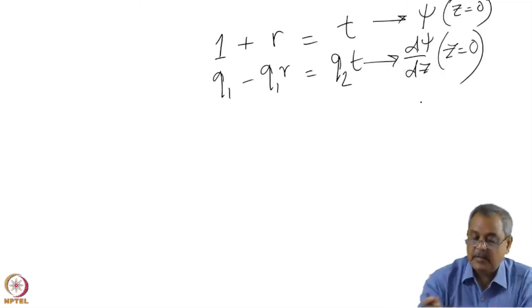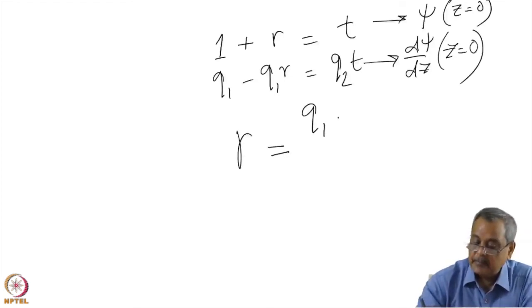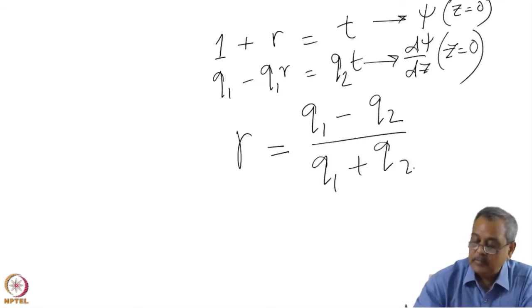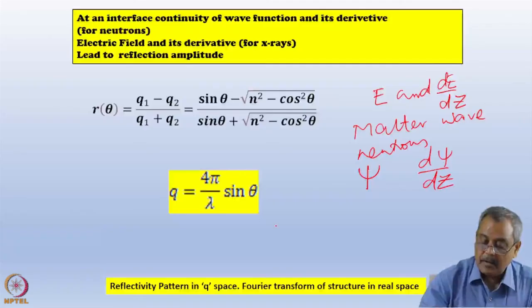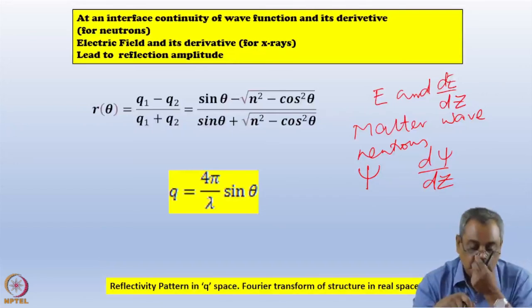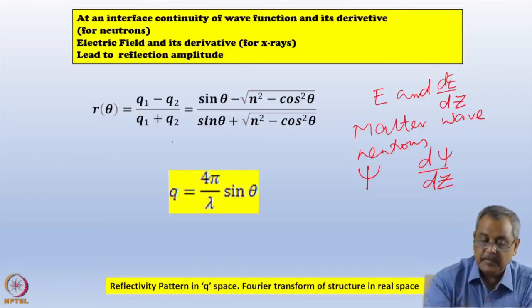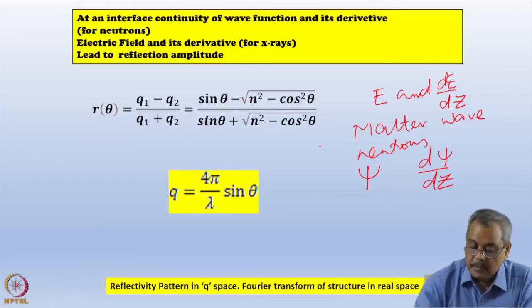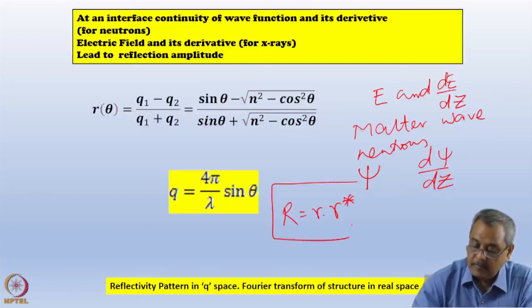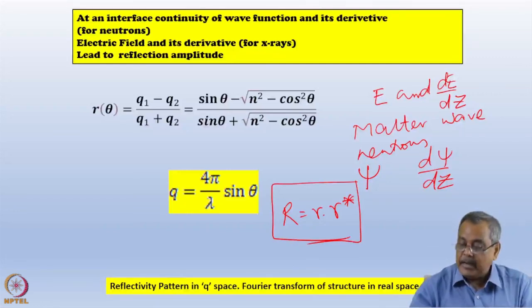Solving these two equations, I get the reflection amplitude r equal to (q1 − q2) divided by (q1 + q2). Writing q1 = 4π/λ · sin θ and the corresponding expression for q2, you obtain the full Fresnel expression. The reflected intensity is r multiplied by r-star, and this is the reflected intensity for an interface between vacuum and a medium of infinite thickness.